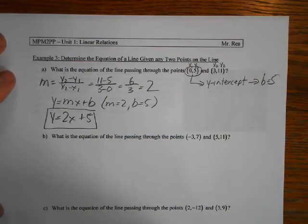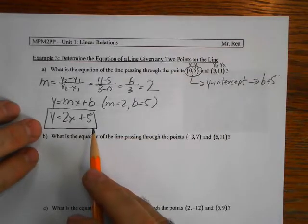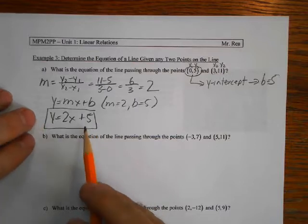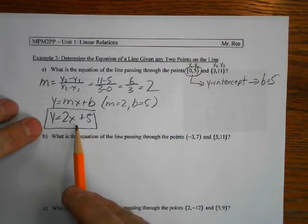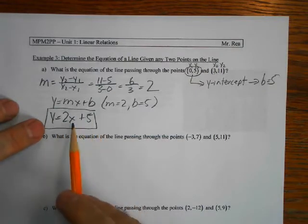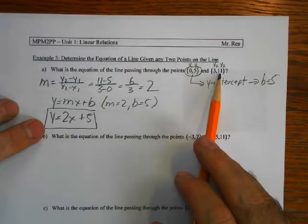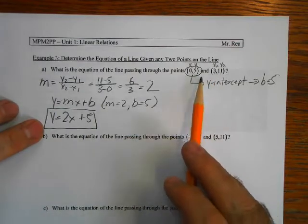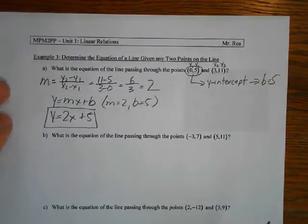One way you can always check your work — and you can do this for your homework — is create the graph of this equation on Desmos or any other graphing app. Type in the equation, see the line show up, and make sure both of the points are on the line you just created. As long as they are, you know it's 100% correct.